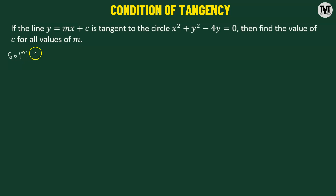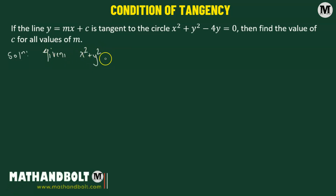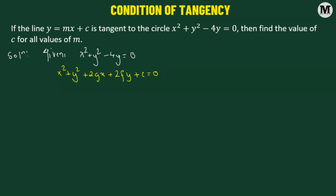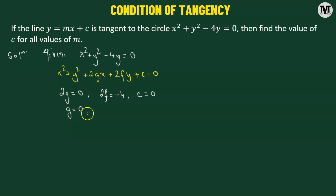We will first consider the equation of the circle: x squared plus y squared minus 4y equals 0. We compare this with the general equation of a circle: x squared plus y squared plus 2gx plus 2fy plus c equals 0. Equating coefficients, 2g equals 0, 2f equals negative 4, and c equals 0, which gives us g equals 0, f equals negative 2, and c equals 0.